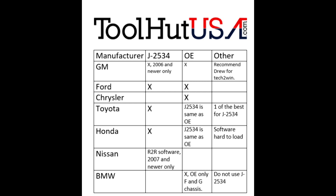Nissan recently came up with their R2R software. They claim you can program all the way back to 1998, but my recommendation is 2007 and newer — it's a time and stability thing. That's my recommendation.